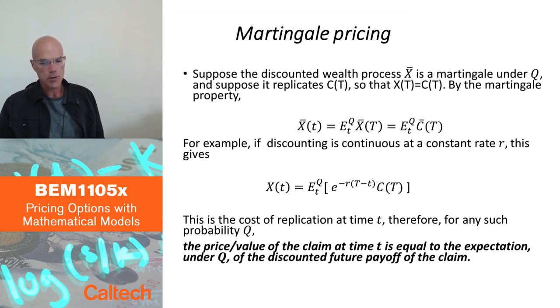So, that's our main message. Which, the cost of replication at time t, x of t, is the price of the claim, and it's equal to the expectation under Q, under the Martingale probability, of discounted future payoff of the claim. The main principle in the option pricing theory.